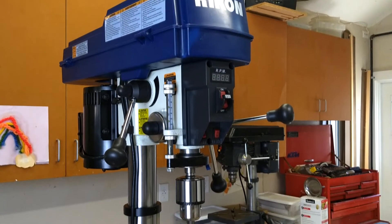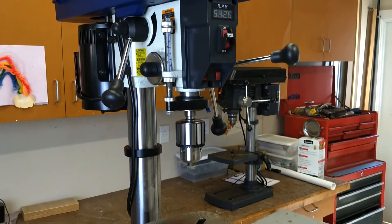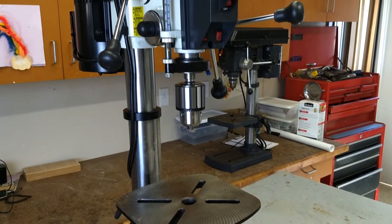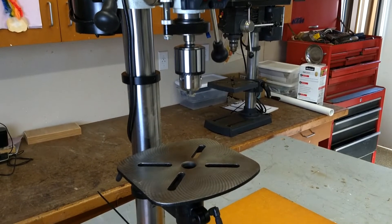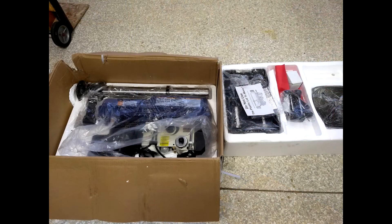The benchtop 30-212 variable speed features a large 3 quarter horsepower motor, a variable speed range from 150 to 2800 RPM and a few of those convenience features.